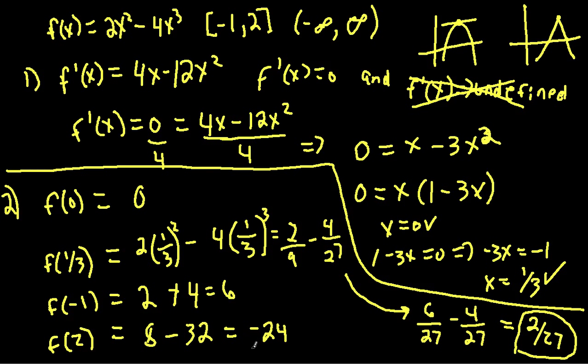So we have now 0 is our one value, we solved for 2 over 27ths there, and 6 is our other value, and negative 24. So out of these, we need to find what is our biggest and what is our smallest. It's obvious that this will be our smallest, so this is our min. And our biggest out of all these numbers, 6 seems to be our biggest, so that is our max.